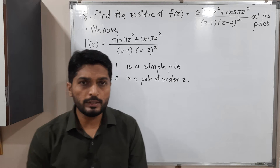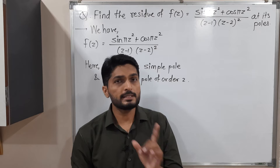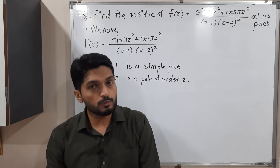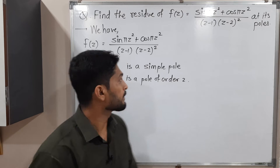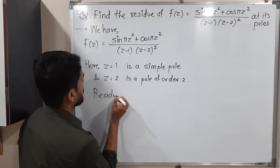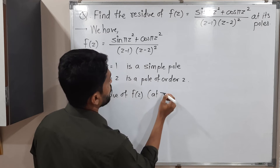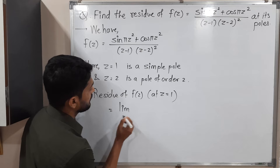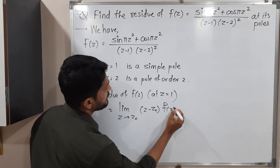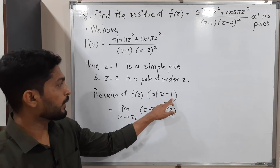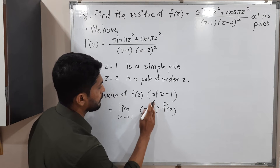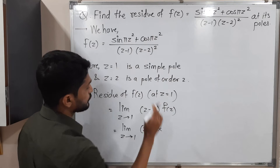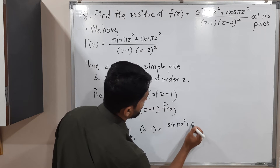Now we have to find the residue. The residue has a definition involving the Laurent series expansion, but since we have sin(πz²) + cos(πz²) in the numerator, expanding that would be very hectic. Instead, I will use the residue formulas for poles of known order. For the residue of f(z) at z=1, which is a simple pole, the formula is: limit as z tends to 1 of (z−1)·f(z). Let me substitute f(z) as the entire function: sin(πz²) + cos(πz²) divided by (z−1)(z−2)².